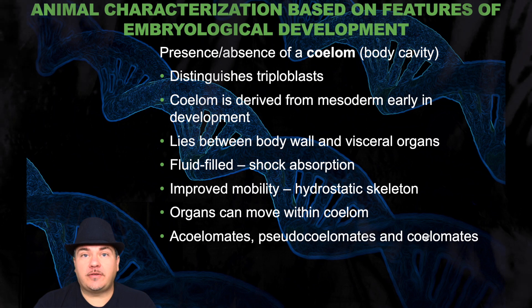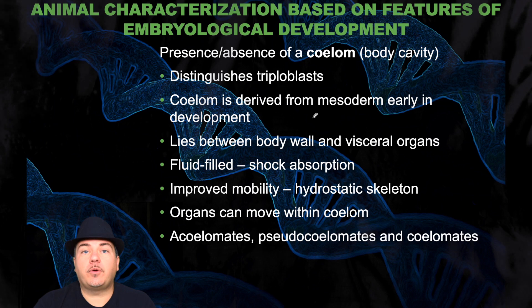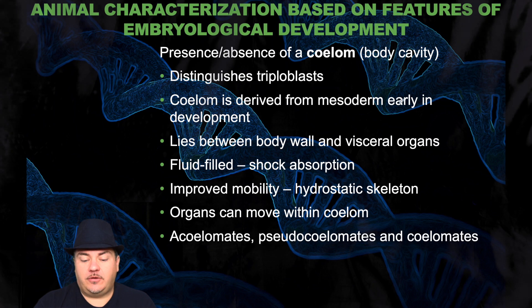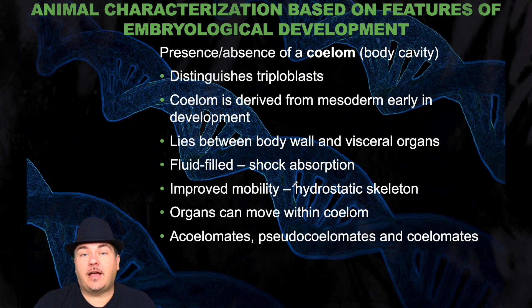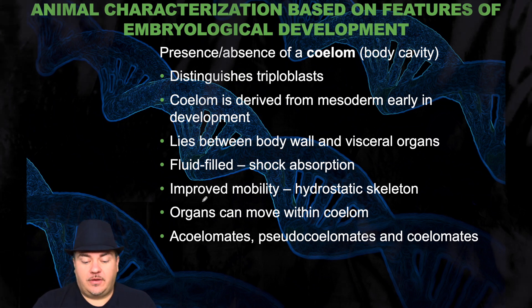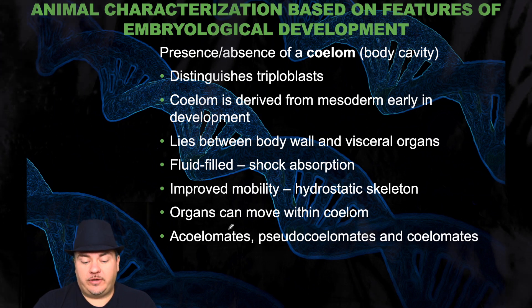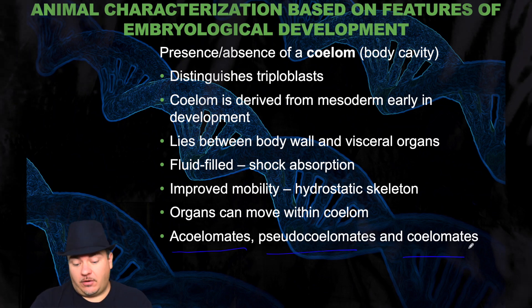Animals are also distinguished based on the presence or absence of a coelom, which is a body cavity — either a fluid or gas filled cavity inside the body of the organism. This is a way of distinguishing triploblasts from each other. The coelom is derived from mesoderm early in development. It lies between the body wall and visceral organs. The fluid-filled mesoderm can be used for shock absorption or improve mobility — it can act like a hydrostatic skeleton. The organs can move within the coelom. There are three different types: acoelomates, pseudocoelomates, and coelomates.